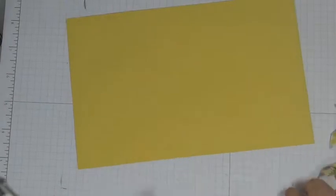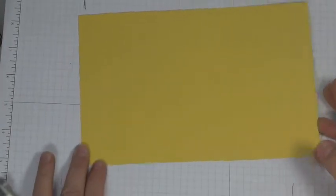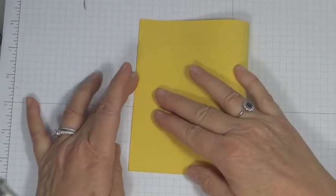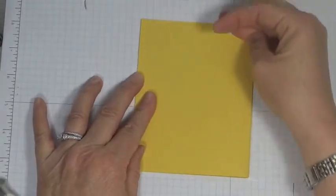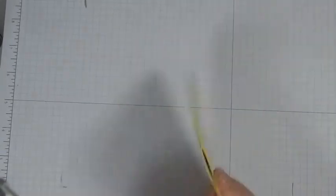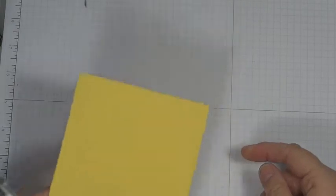I'm going to start with a piece of Daffodil Delight cardstock. This is 5 1/2 by 8 1/2. I'm going to fold that in half and make my base card. A good score. Then I'm going to just take this and put it aside.